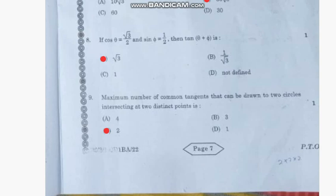Question number 8: If cos θ = √3/2 and sin ω = 1/2, then tan(θ + ω) is—the correct answer is option A, √3.